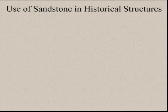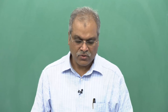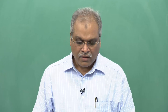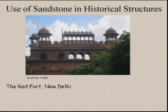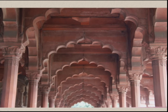Looking at the use of sandstone in historical structures — if you look around and try to see different monuments and historical structures in India, you will find that most of the historical structures in Delhi and around are made up of sandstone. Those are again the ferruginous sandstone. The Red Fort in New Delhi is an example — red sandstone was brought from the quarries of Dholpur in Rajasthan and Fatehpur Sikri.